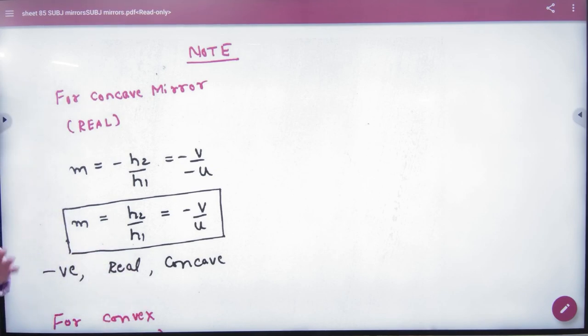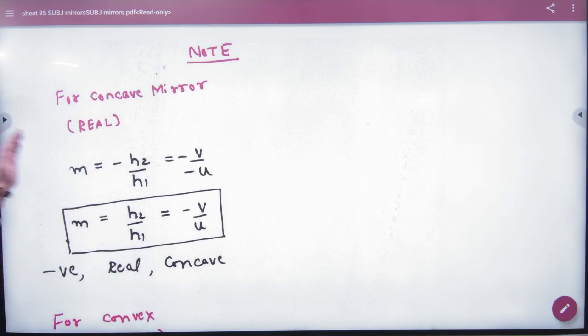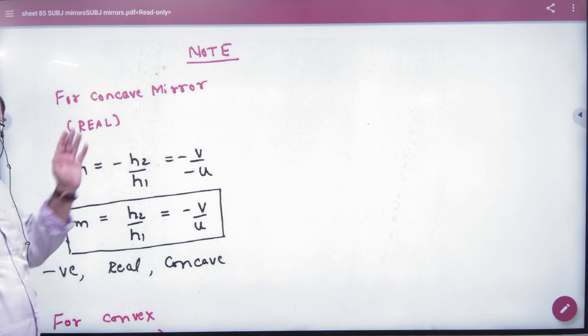A concave mirror makes two images - one real and one virtual. For the real image, what is the magnification? H2 by H1, V by U.